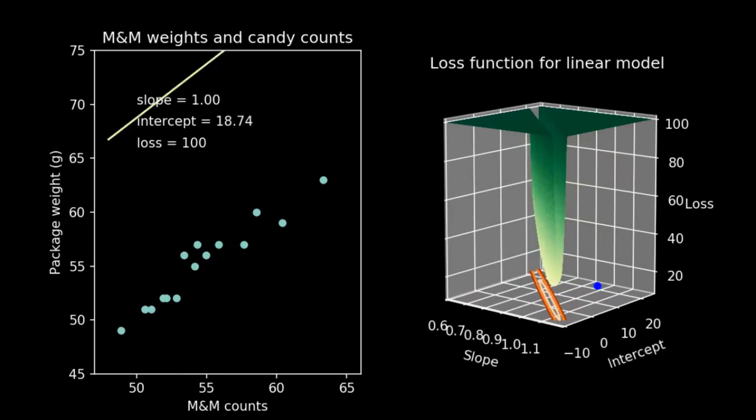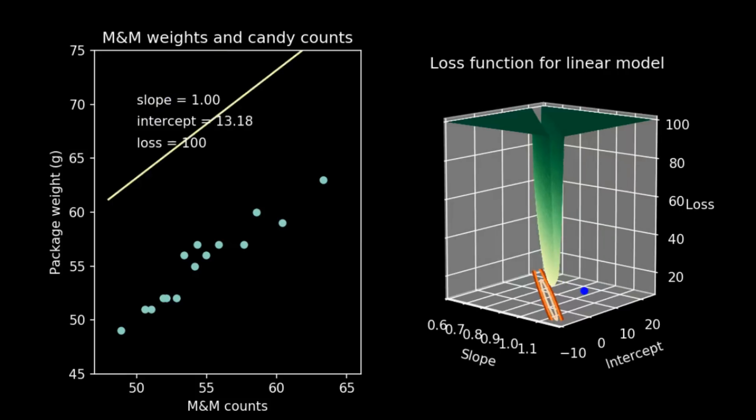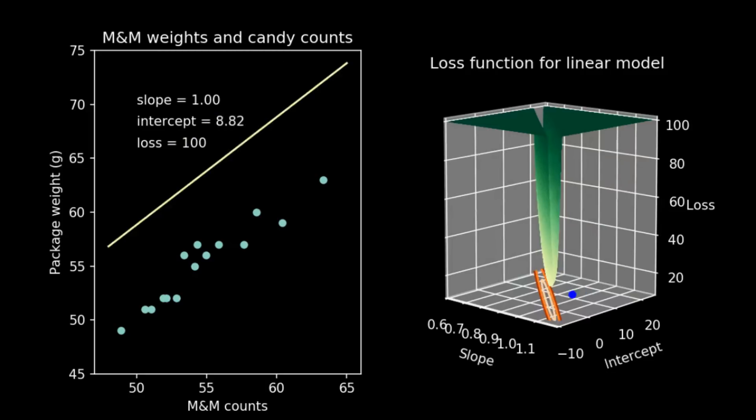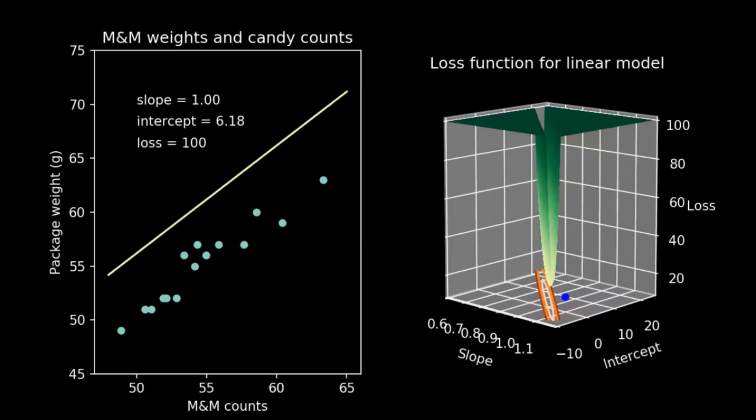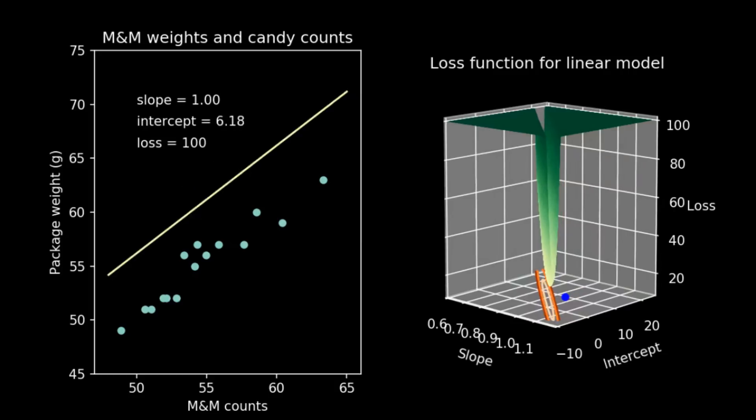We can start off away up high and make a step headed down the hill with the size of the step being related to the steepness of the slope. This moves us closer to the bottom of the valley, but doesn't get us there yet, so we repeat it. Stepping down the slope, whichever direction that is, again and again, with the step size related to the steepness.